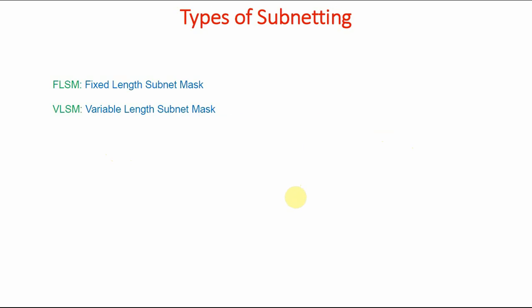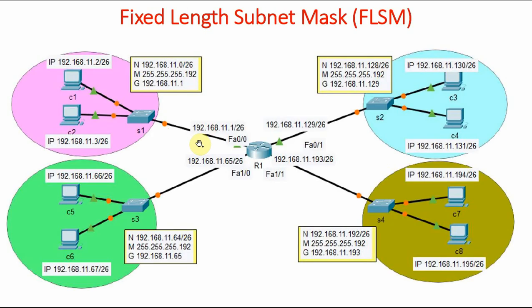Now when we talk about subnetting, we have two types available: fixed length subnet mask and variable length subnet mask. Let me show you the diagrams. In fixed length subnet mask, all the networks will have the same mask. Here the mask is slash 26, here also in this network it is slash 26, here also it is slash 26. That means in fixed length subnet mask, all the subnets are going to be of equal length.